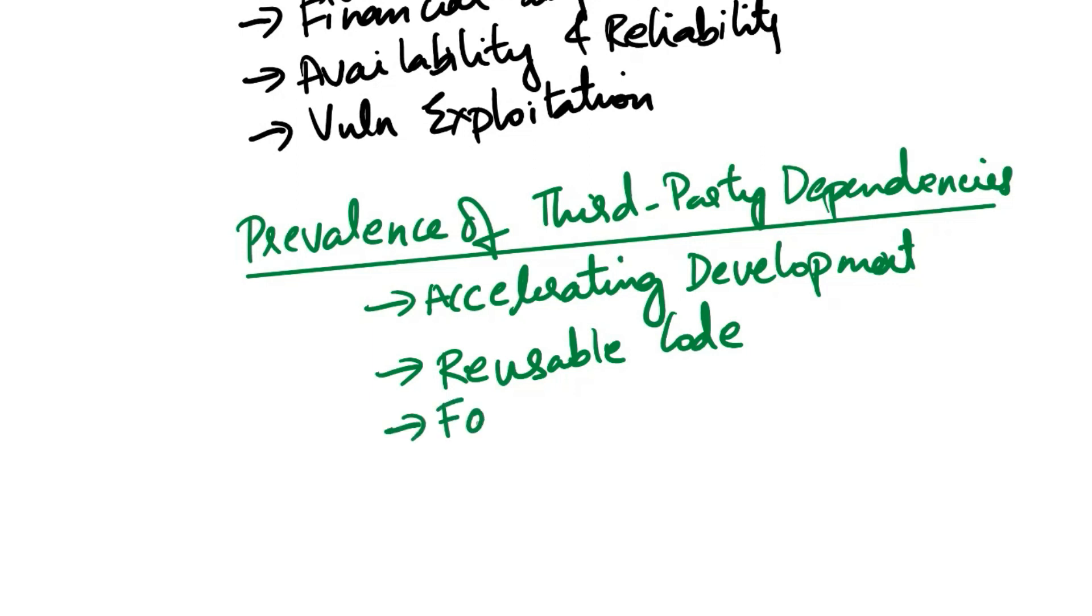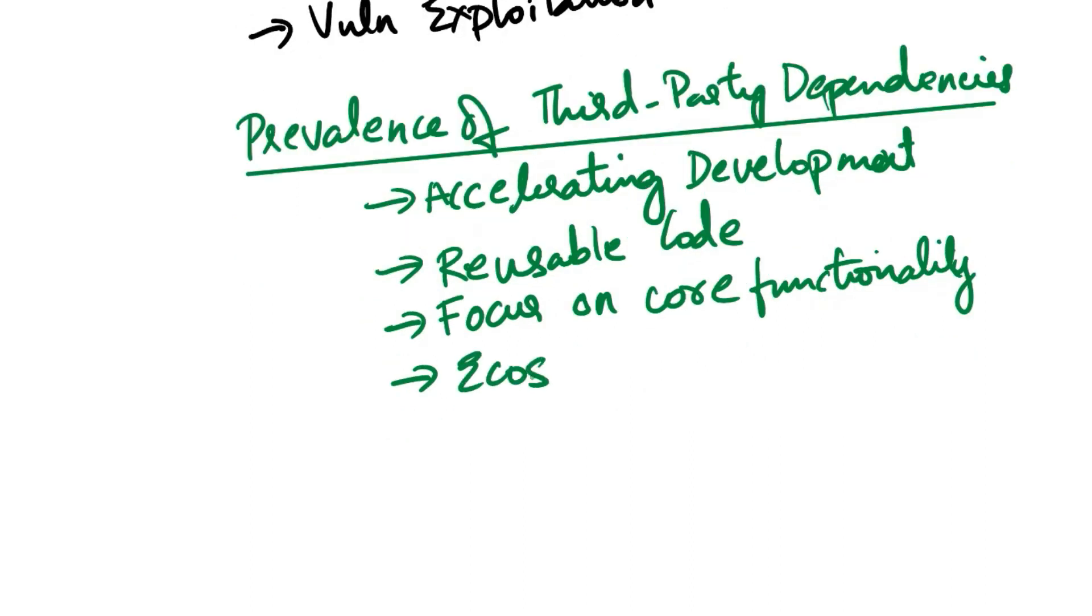Next is focus on core functionality. So usually what developers do, they use third-party dependencies for non-core functionalities like authentication and encryption so that developers can focus more on building features that differentiate their software. Next is ecosystem growth. Open source libraries and projects contribute to the growth of the software development ecosystem.